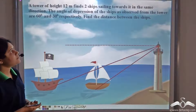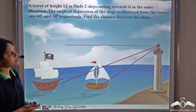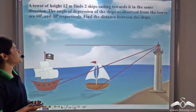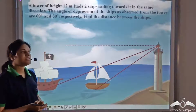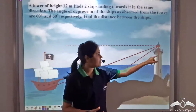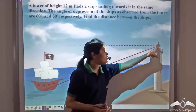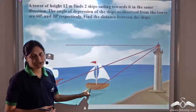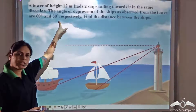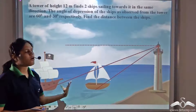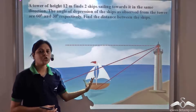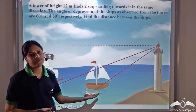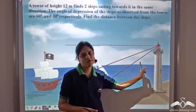A tower of height twelve meters has two ships sailing towards it in the same direction. The angles of depression of the ships as observed from the tower are sixty degrees and thirty degrees respectively. Find the distance between the ships. There is an observer at the top of the tower who observes two ships sailing towards it. Using trigonometric ratios, he can find the distance between these two ships using the angles of depression which he has calculated.